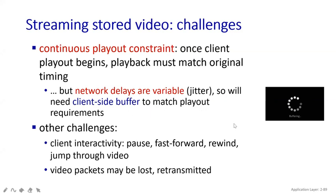From the server it has been sent to the client, but the client is getting a buffering message because the server-side network is proper, but on the client side there is a network delay. That network delay we can measure as a variable, also known as jitter. This kind of playout always has to match with the server. Whenever the server sends packets, it calculates the packets and shows you the video.